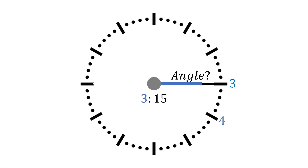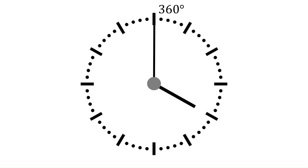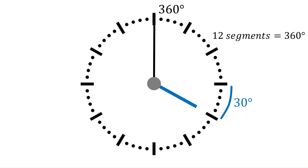So by 3:15, the hour hand should be somewhere past 3, but not yet at 4. Let's take a look at the clock's movements from 3 o'clock to 4 o'clock. The minute hand makes a full rotation of 360 degrees in the hour, while the hour hand moves from 3 to 4 in the same time. The clock has 12 numbers, so 12 segments make the full 360 degrees — divide 360 by 12 to give 30 degrees.